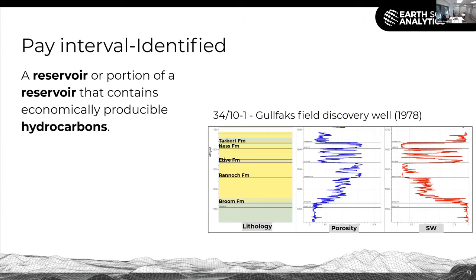Here we have a definition of a pay interval. A pay interval is a portion of a reservoir that contains economically producible hydrocarbons. This is the discovery well from the Gullfaks field, the 34-10-1 well. We see here that we have good oil saturations within the Tarbert, Ness, Etive and Rannoch formations with a corresponding increase in porosity. We're all very happy that this is a nice hydrocarbon pay zone.